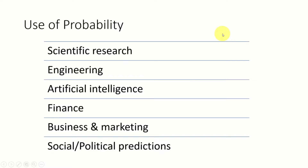Let's briefly look at what are the key usages of probability. We use probability in scientific research, especially in natural science, like physics, chemistry, biology, because nature is not perfect. And when it comes to engineering, we have to work with matter and energy — they are again natural phenomena. So we can't make things perfect, and we have to take some probabilistic decisions for reliability and quality.